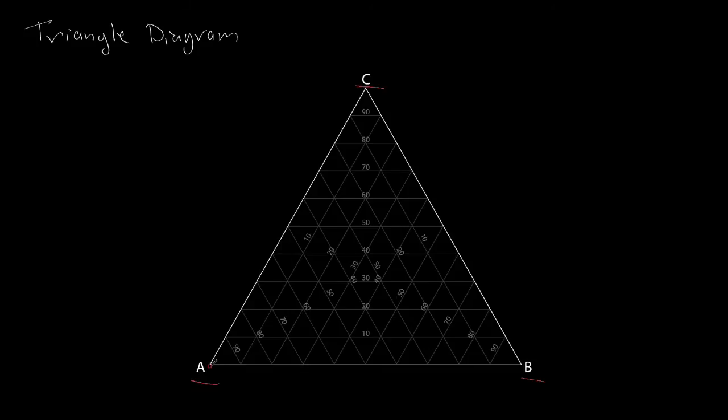The first thing to notice about the triangle diagram is that we have three components listed at the primary axes of the triangle diagram, and then we have a series of numbers which basically count down away from each of those numbers. So if I were to draw a particular point here, this corner is pure A. Similarly, over here, this is pure B and here is pure C.